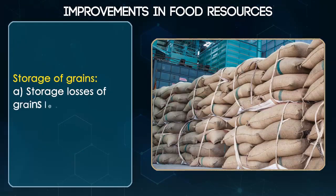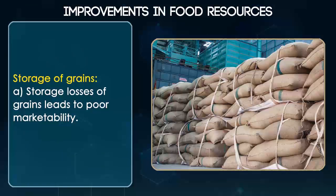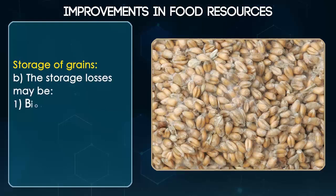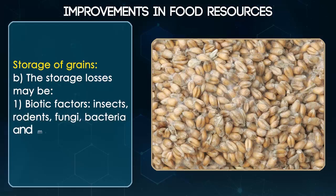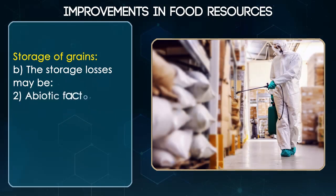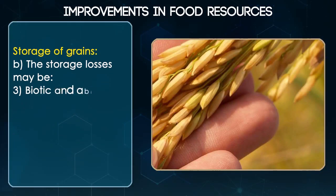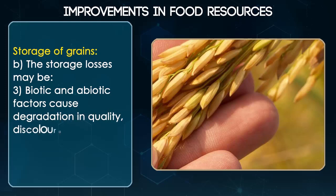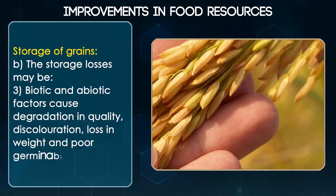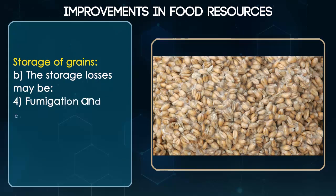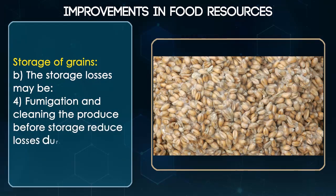Storage of Grains: Storage losses of grains lead to poor marketability. Storage losses may be due to biotic factors — insects, rodents, fungi, bacteria and mites — or abiotic factors — moisture and inappropriate temperature in the storage area. Biotic and abiotic factors cause degradation in quality, discoloration, loss in weight and poor germinability. Fumigation and cleaning the produce before storage reduce loss during storage.